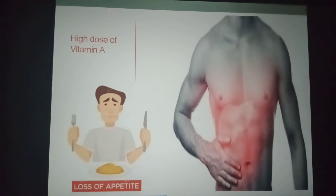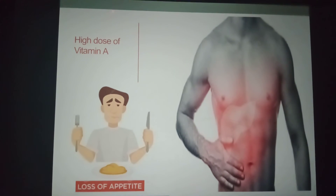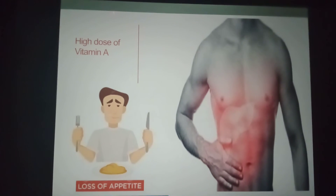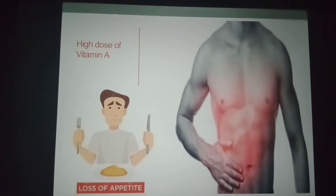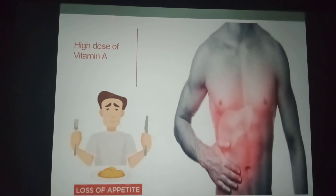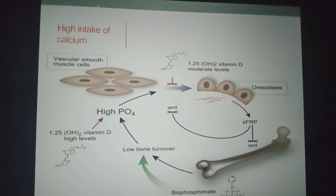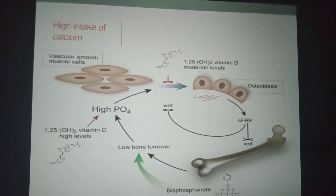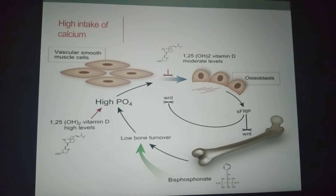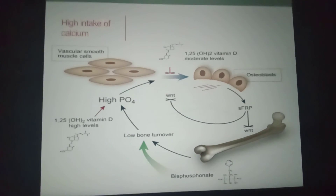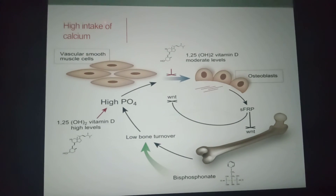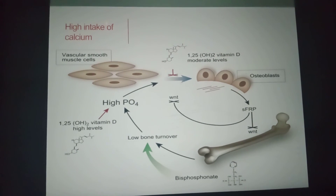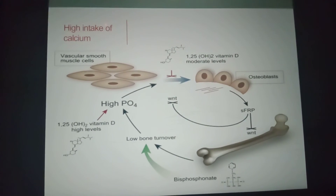Similarly, a high dose of vitamin A causes loss of appetite and liver problems. Excessive intake of vitamin D can lead to the deposition of calcium in various tissues — as can be seen here, showing excessive deposition of calcium. So that covers all common forms of malnutrition: protein energy malnutrition, mineral deficiency diseases, and over intake of nutrients.